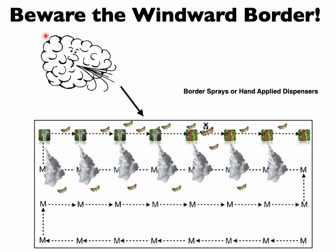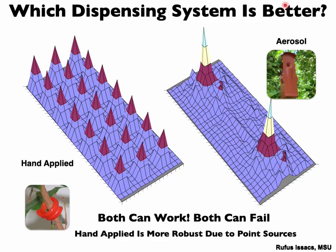Beware the windward border with aerosol emitters. When emitters are placed along borders with large gaps between them, insects — which tend to move toward edges anyway — can find areas where females are calling and males are mating with them. Border sprays or hand-applied dispensers along the edges are really important to address this. Regarding which dispensing system is better: both can work and both can fail. It depends on how you manage the system relative to your populations and densities. Hand-applied is probably more robust because of its uniform distribution of dispensers releasing from placement until empty — targeting dispensers that last at least 180 to 200 days.